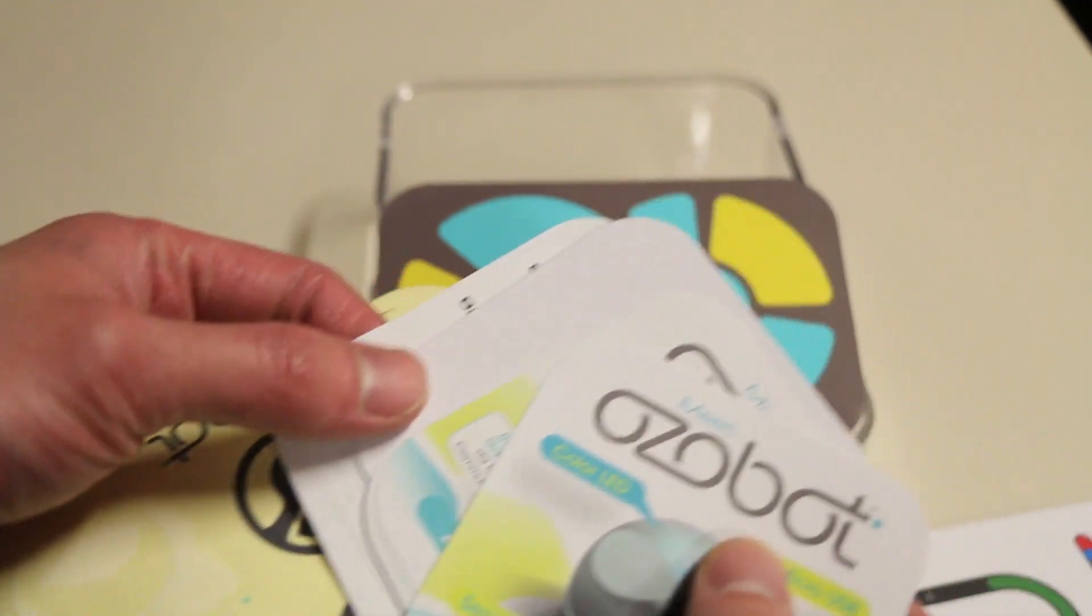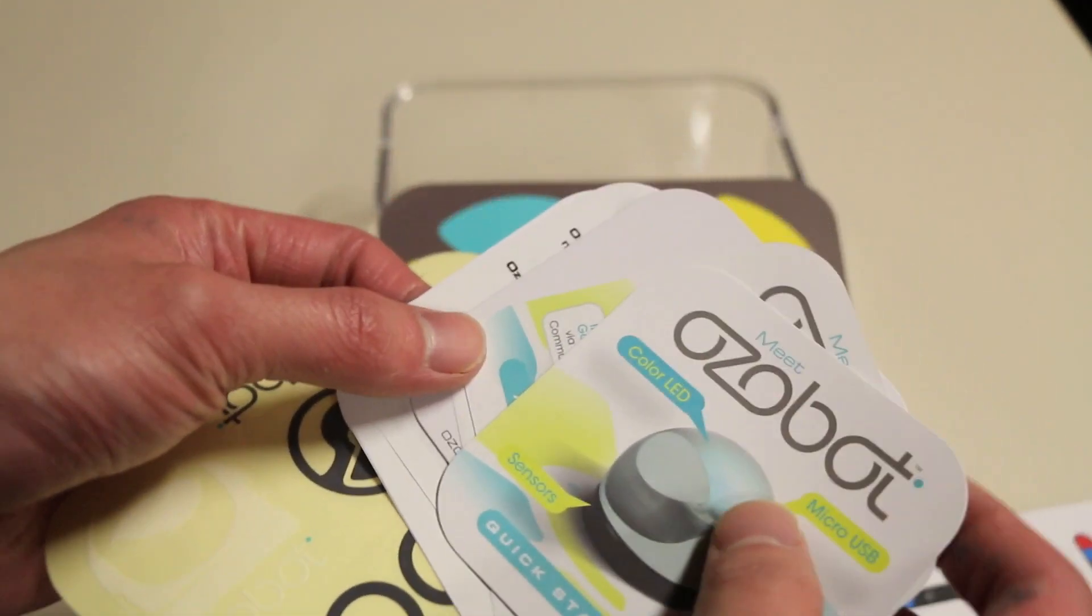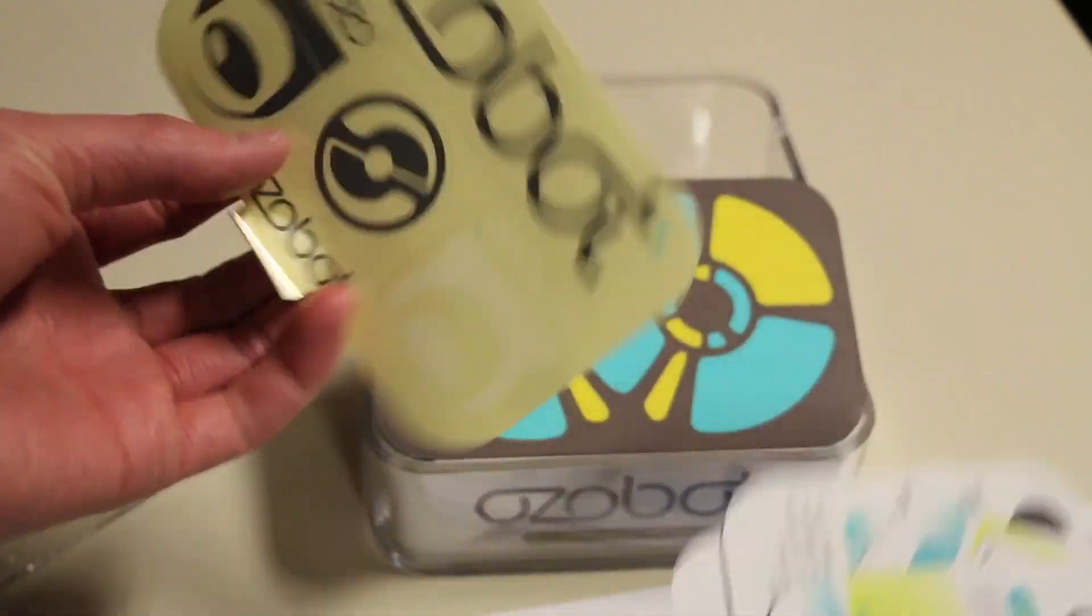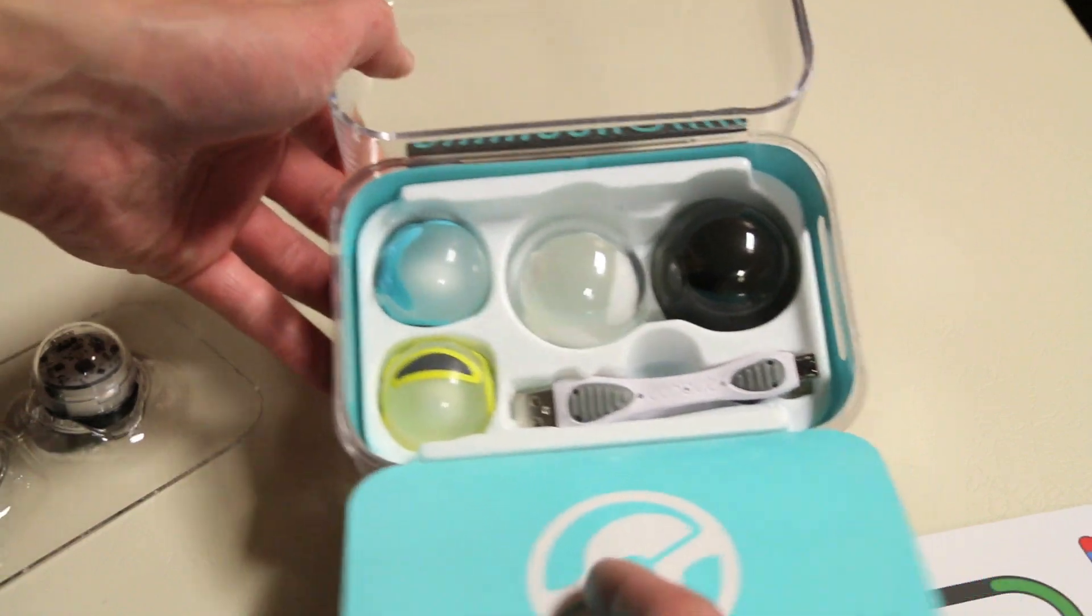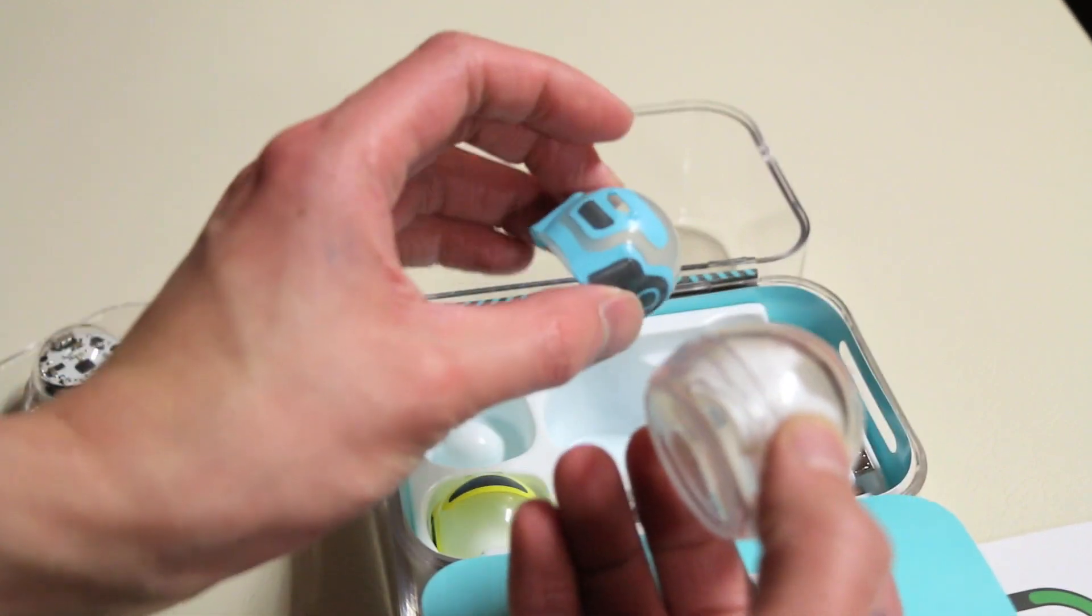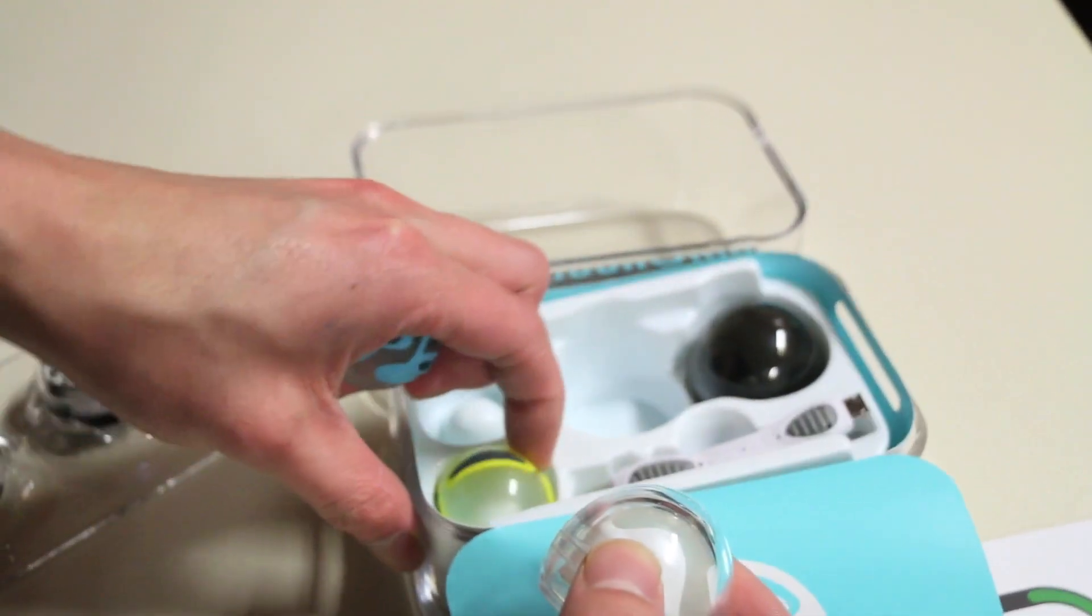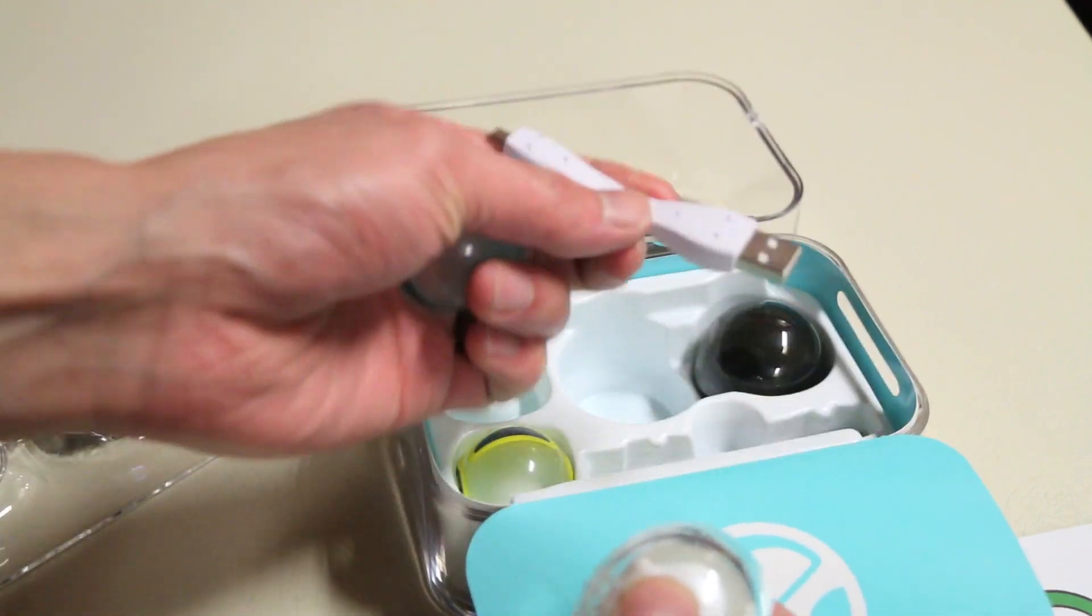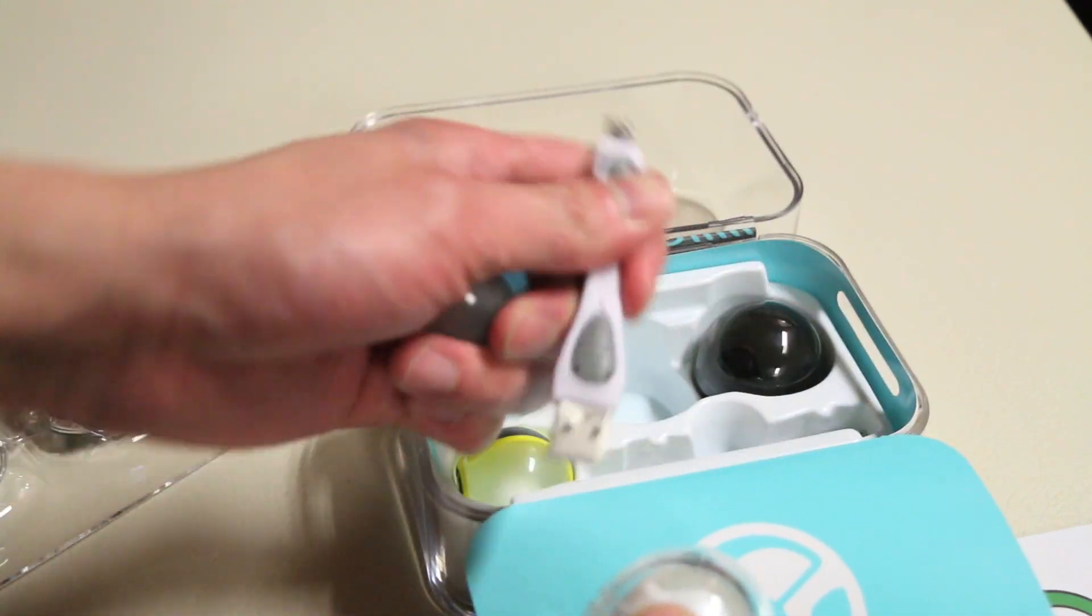The Ozobots do also have to be calibrated for the different surfaces that you can use them on, some zero numbers as well as stickers. We also have some accessories here. The Ozobots can be worn with different style helmets. So the clear helmet, a turquoise helmet, a yellow kind of black helmet as well as the all black helmet and two micro USB charging cables.